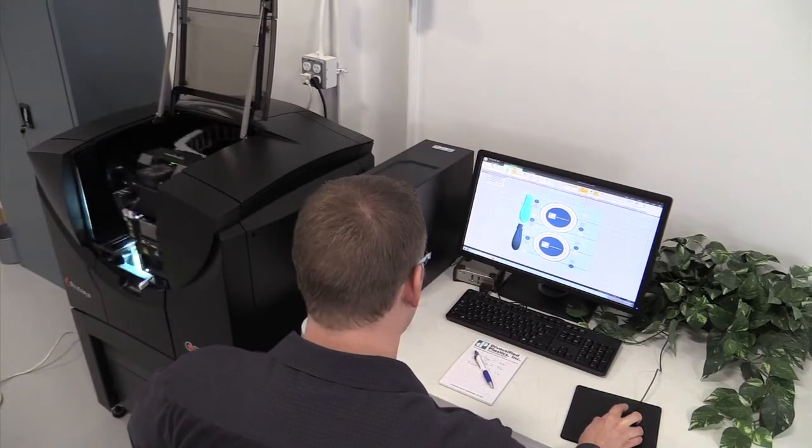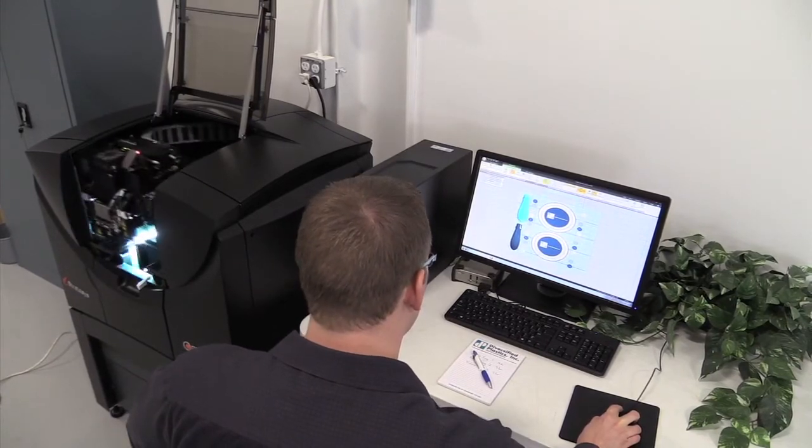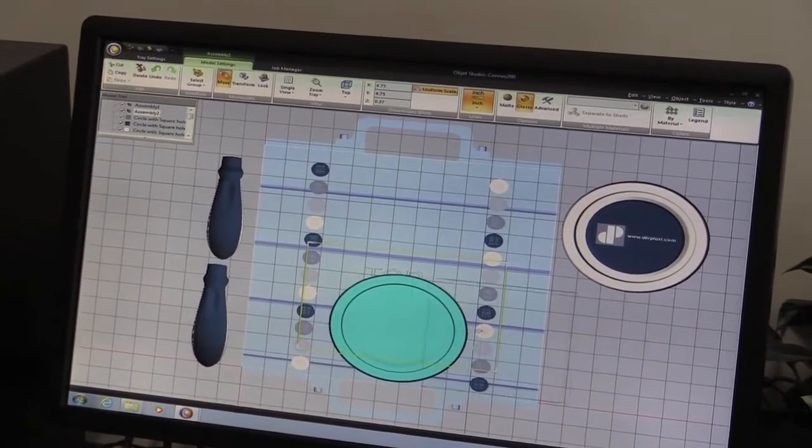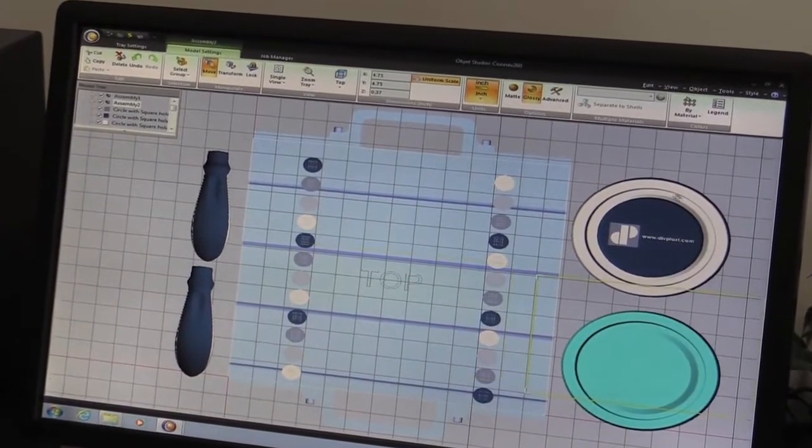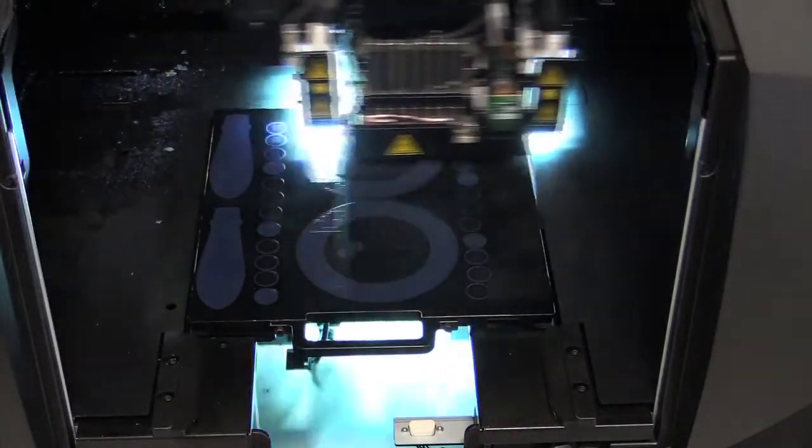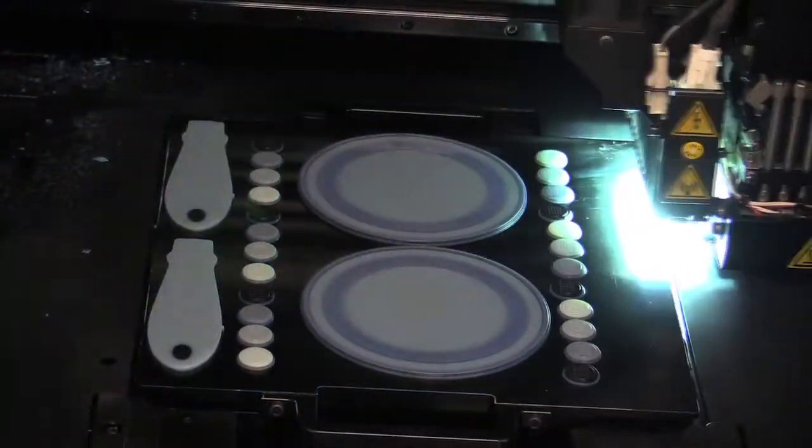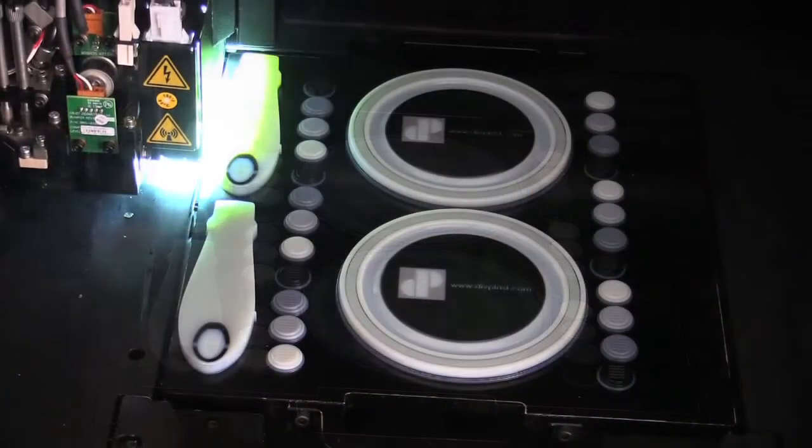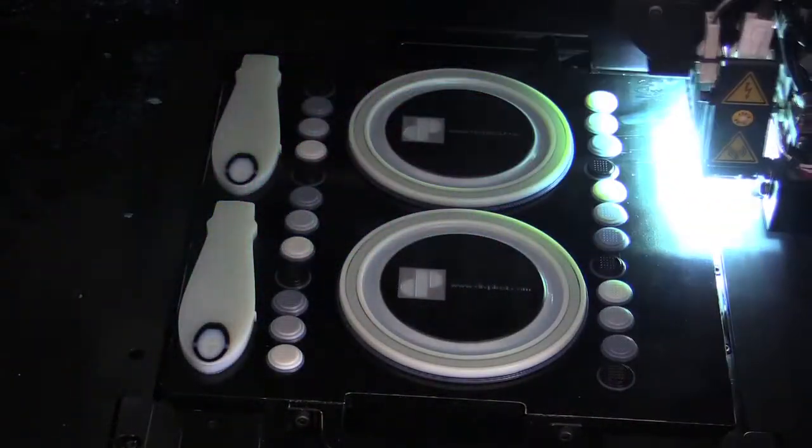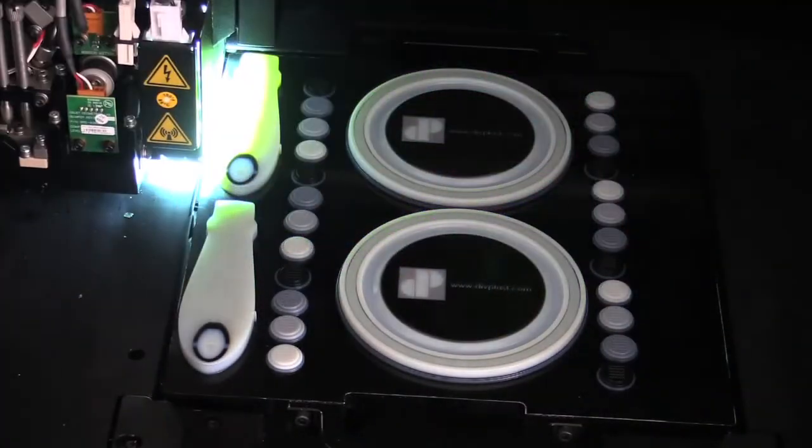The PolyJet process offers you the best selection of material for prototype parts. Using 13 base materials, we can blend various combinations to make 140 different resins. This wide variety allows us to create prototypes that simulate diverse mechanical and physical properties.